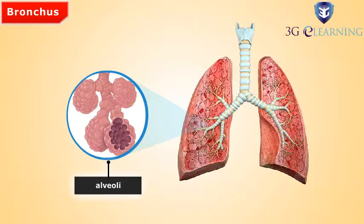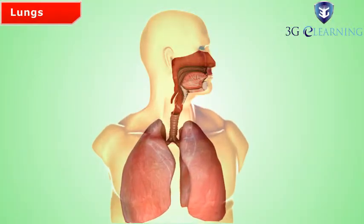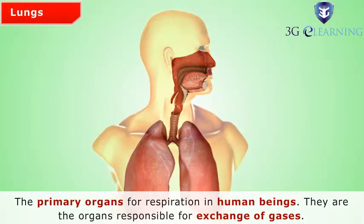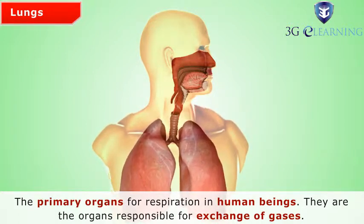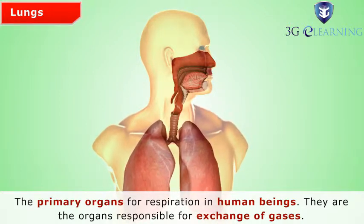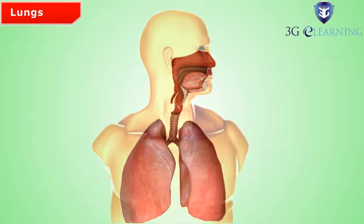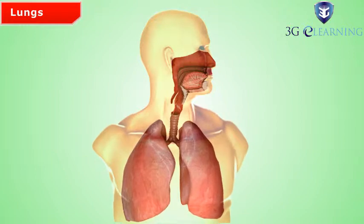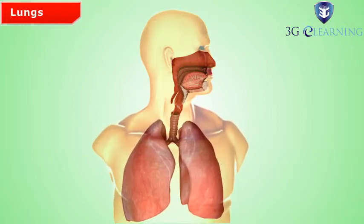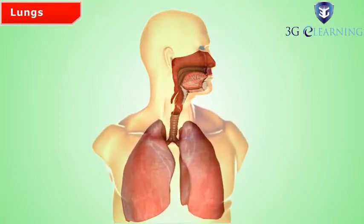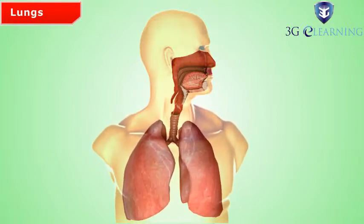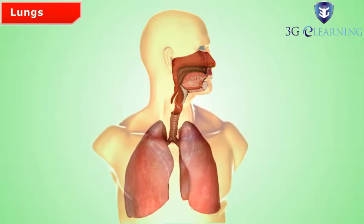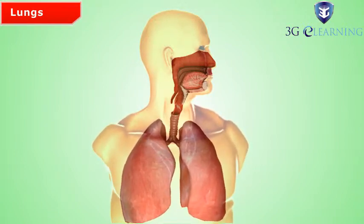Lungs. The lungs are the primary organs for respiration in human beings, responsible for the exchange of gases. Human lungs are very efficient muscular organs. The left lung is slightly smaller than the right lung, because on the left side, the heart is placed in the chest cavity.